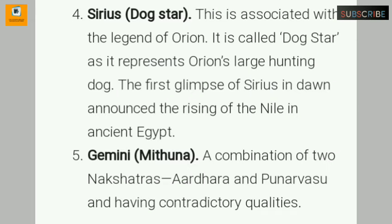Number four: Sirius — Dark Star. This is associated with the legend of Orion. It is called the Dog Star as it represents Orion's large hunting dog. The first glimpse of Sirius at dawn announced the rising of the Nile in ancient Egypt.